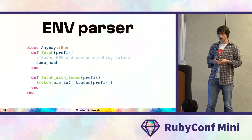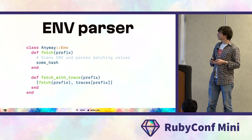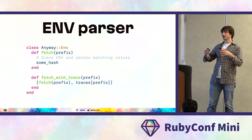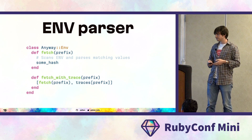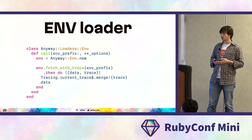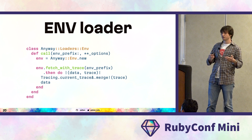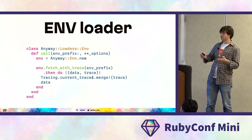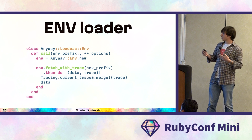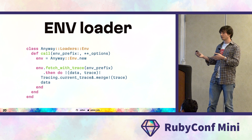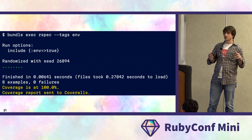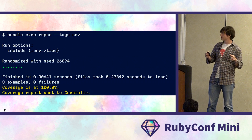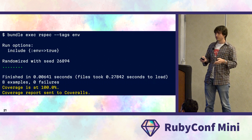There are two components involved in this process. First is an Env Parser — a component responsible for dealing with the actual environment and building hashes out of env. The second is an Env Loader — a source loading plugin for the library. This loader is very simple; it just knows how to use the parser properly. We have tests for these two components: 100% coverage, and they're green.